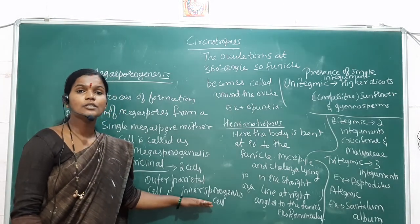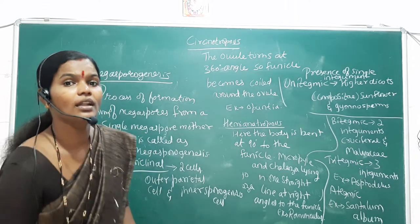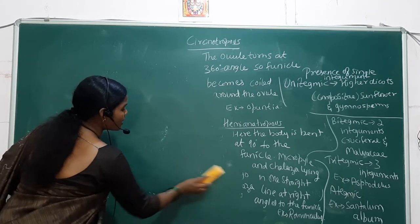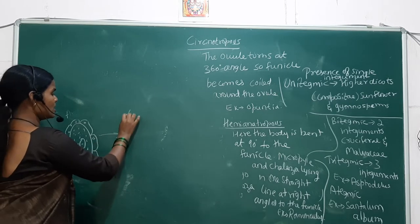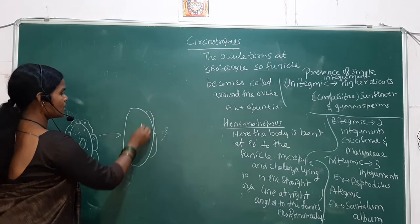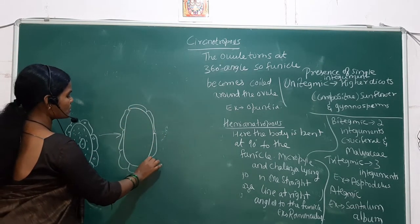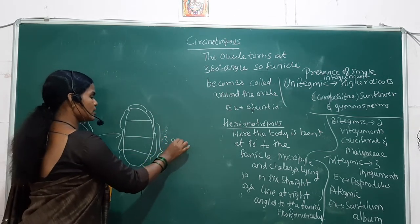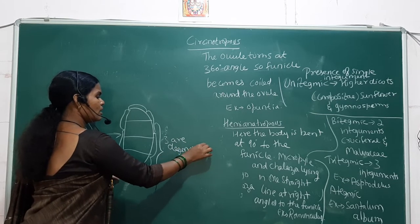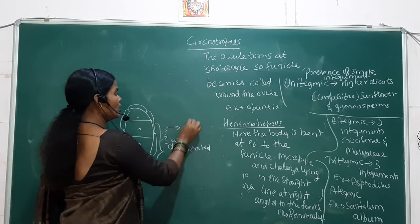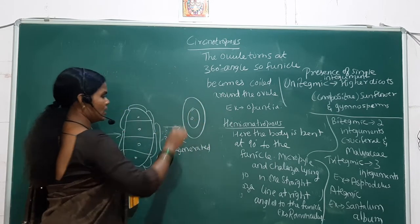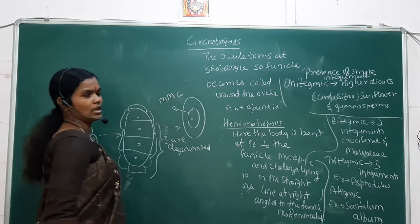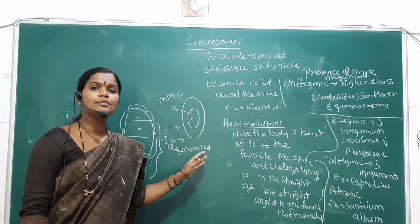The inner sporogenous cell undergoes meiotic cell division and forms four daughter cells. Among these four daughter cells, three are degenerated and one remains. That remaining daughter cell is called the megaspore mother cell.